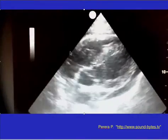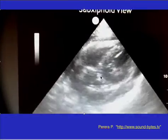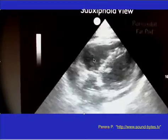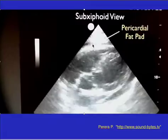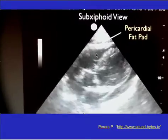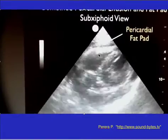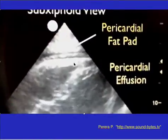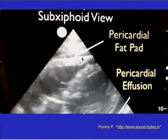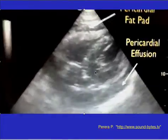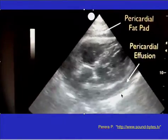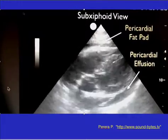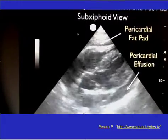This is a sub-xiphoid or subcostal view — you know that because you see liver up here. You can see the right ventricle, which is the closest chamber to the chest wall. You can also see a little pericardial fat pad and a pericardial effusion.